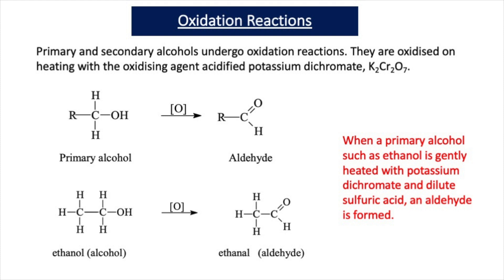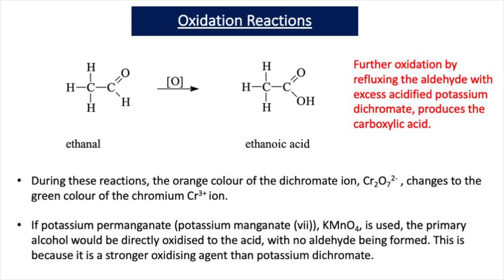This is only partial oxidation because aldehydes can be oxidised further to carboxylic acids. You have to make sure that you only gently heat the primary alcohol with acidified dichromate. Aldehydes undergo further oxidation to carboxylic acids by refluxing the aldehyde with excess acidified potassium dichromate. For example, ethanal is oxidised to ethanoic acid. An oxidising agent is represented by the symbol [O].